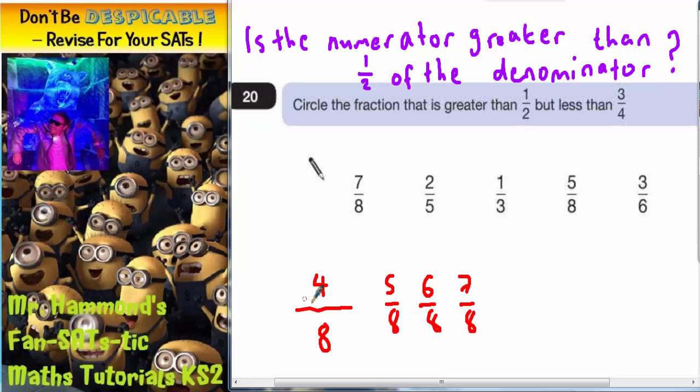Anything less than four, in terms of eighths, would be smaller than a half. So we could have three eighths, two eighths, one eighth, they would all be smaller than a half.